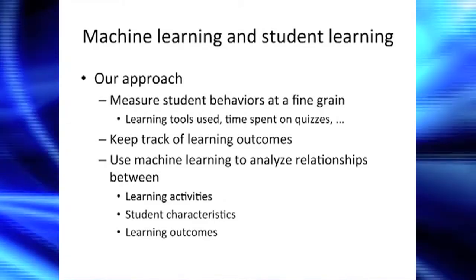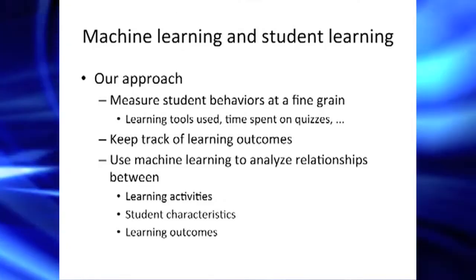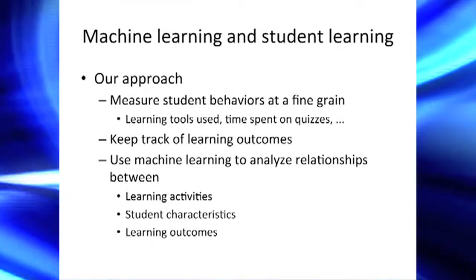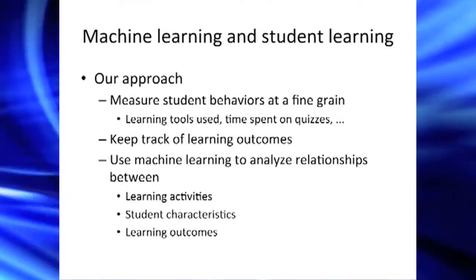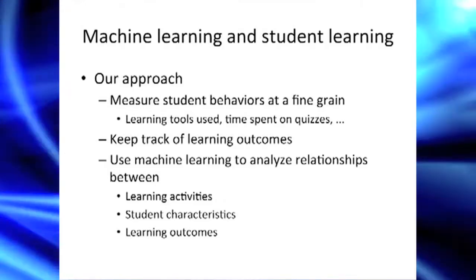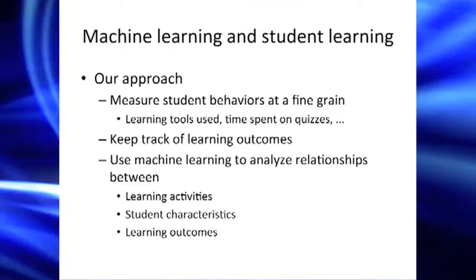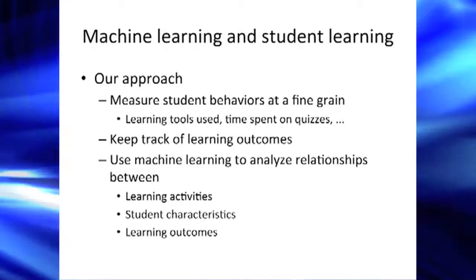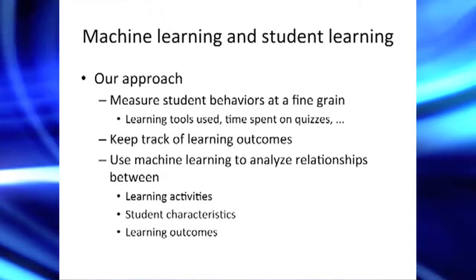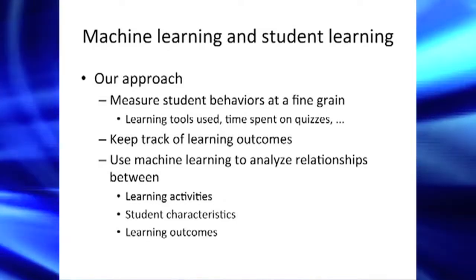We're also going to keep track of their learning outcomes — how they perform in various classes, how they do in project work, and to what extent they collaborate with one another. And finally, we're going to use machine learning algorithms to relate these two groups of measurements to one another: how learning activities contribute to learning outcomes, how these depend on particular characteristics of students such as their cultural and learning backgrounds, to really understand how certain types of technological interventions assist particular groups of students — so we can pay more attention to useful things and not spend time on things that don't contribute to positive learning outcomes.